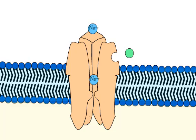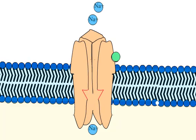With a sufficient number of channels opening at once, the inward flow of positive charges carried by sodium ions depolarizes the postsynaptic membrane.